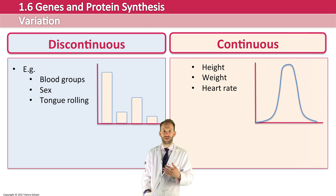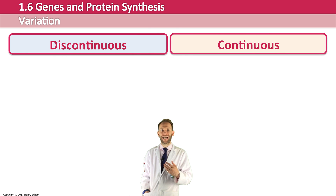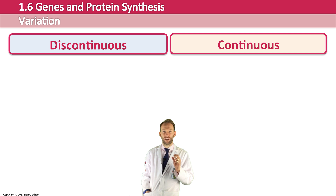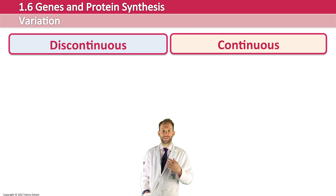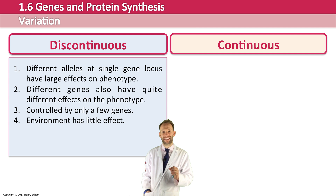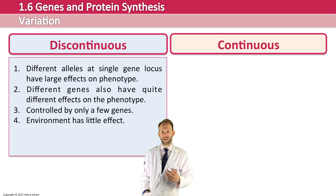Discontinuous variation is usually caused by different alleles at a single gene locus, which can have really large effects on the phenotype. Different genes also have quite different effects on the phenotype. It is quite often controlled by only one or a few genes, and the environment tends to have very little effect on the outcome.